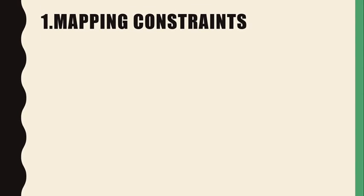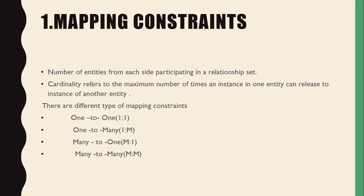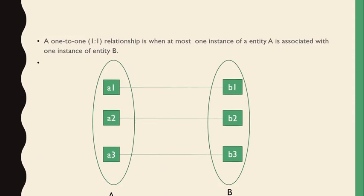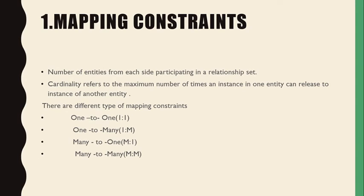Mapping constraints refer to the number of entities from each side participating in a relationship set. Cardinality refers to the maximum number of times an instance in one entity can relate to an instance in another entity. There are four types of mapping constraints: one-to-one, one-to-many, many-to-one, and many-to-many. We will discuss these in detail with examples.